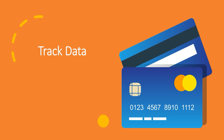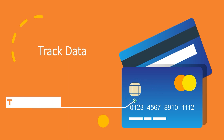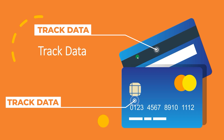Track data, also referred to as full track data or magnetic stripe data, is the data encoded in the magnetic stripe or chip. This type of data is normally used for authentication or authorization during a payment transaction. It can be the magnetic stripe image on a chip, or the data on the magnetic stripe — basically the data here and the data here.